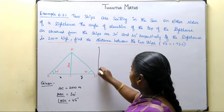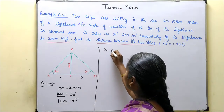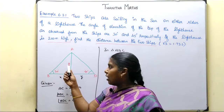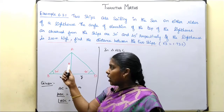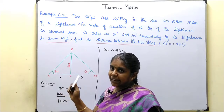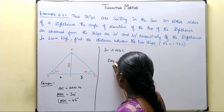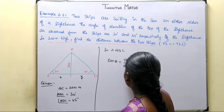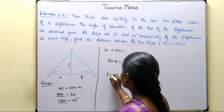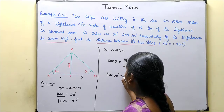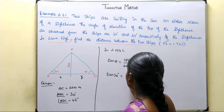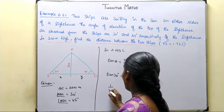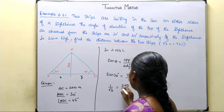Now we will take the left triangle — triangle ABC. The opposite side of the angle is the lighthouse height and the adjacent side is the distance BC, which we call x. Using the tan theta formula: tan theta equals opposite over adjacent. So tan 30 equals 200 over x. Tan 30 is 1 over root 3, so 1 over root 3 equals 200 over x, giving x equals 200 root 3.